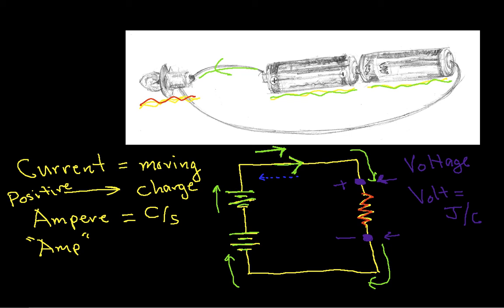Okay, so suppose that for reasons that I won't go into, something happens to make the voltage, or the voltage difference between here and here such that the bottom of the resistor has a higher potential than the top.